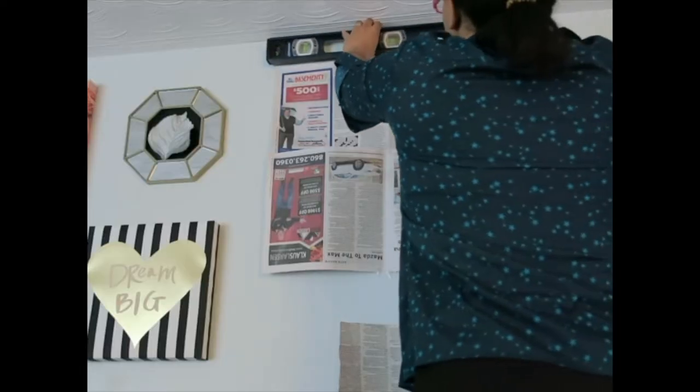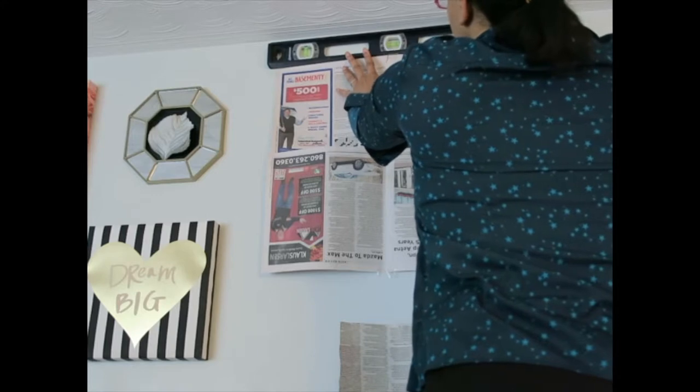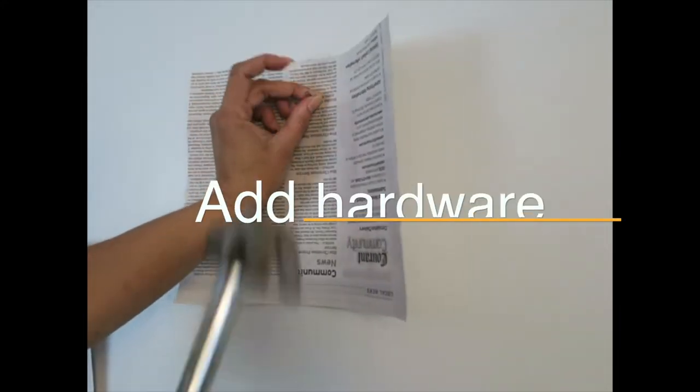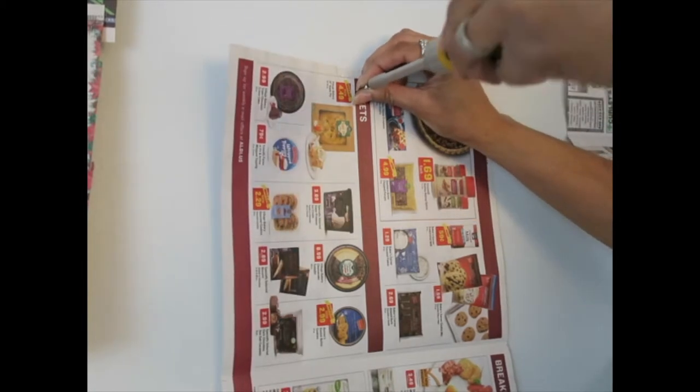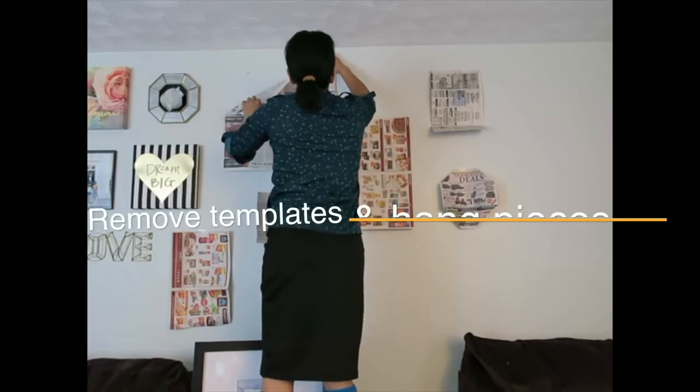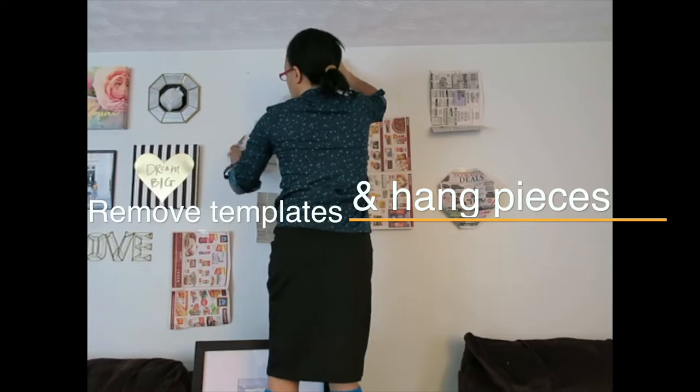I had to use a level for this larger picture that had two brackets. Once you have all your templates the way you want them go ahead and add your hardware. Then remove your templates and hang your wall art.